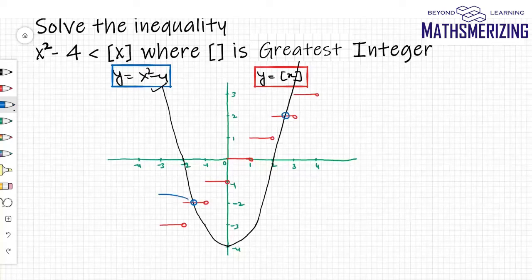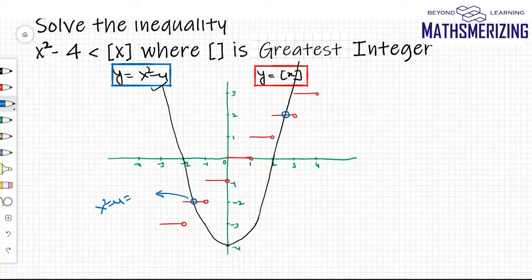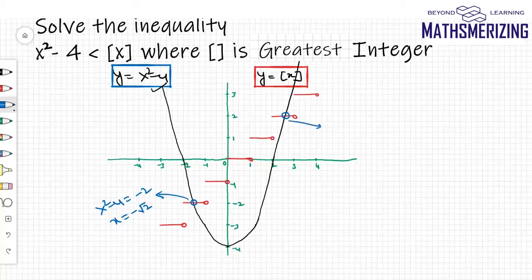For this point of intersection, this point of intersection is the intersection of x² - 4 and 2. So I'll get x as √6.